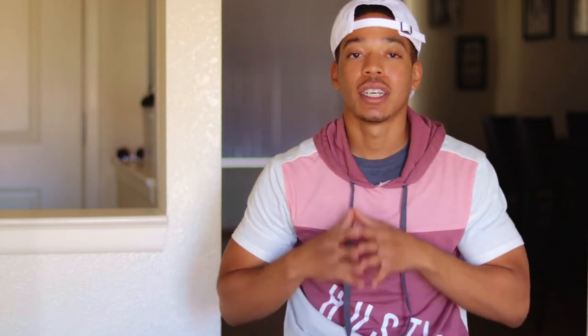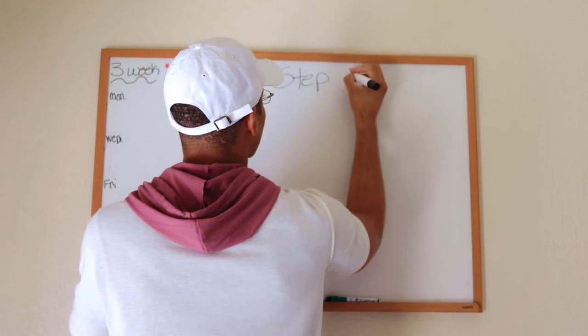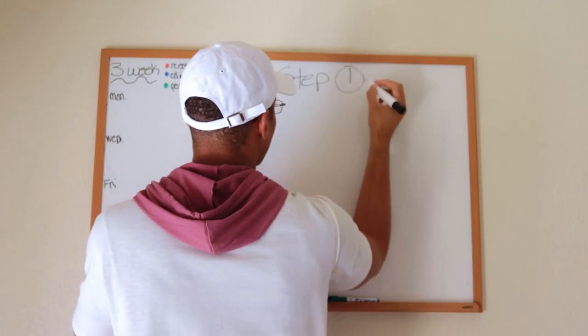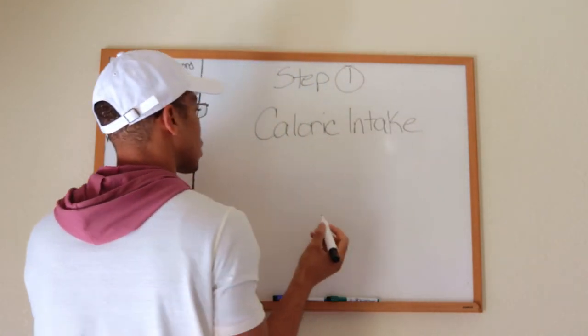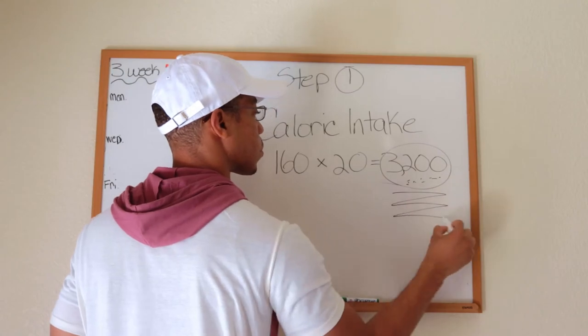Alright guys, I'm going to break this down into four simple steps plus the power tip at the end of the video. The very first step is really simple — you need to figure out what your caloric needs are. I made a video about this, I'll link it up in the cards. You can go back and watch that before you watch this video and then come back and we'll get to step number two.